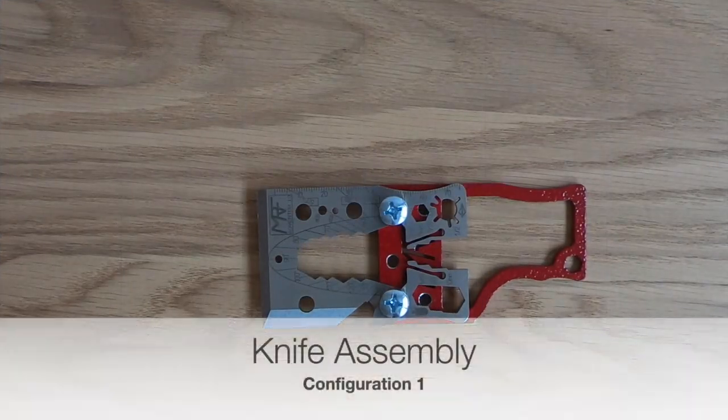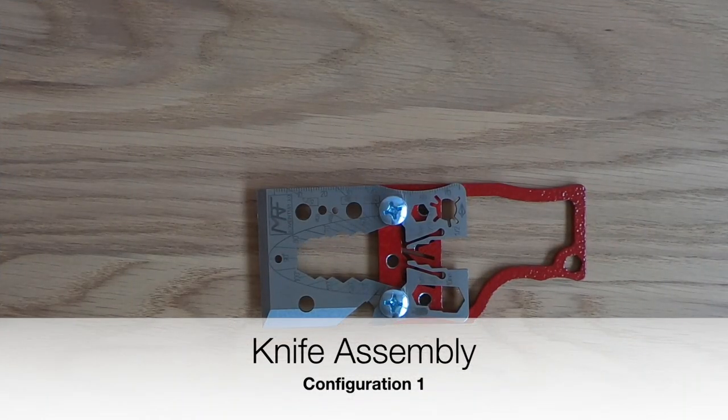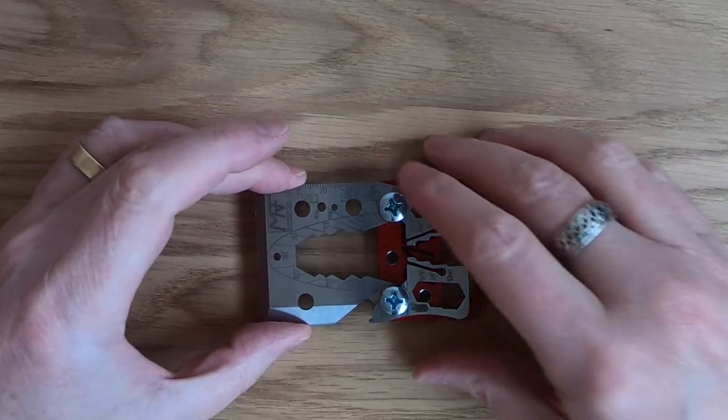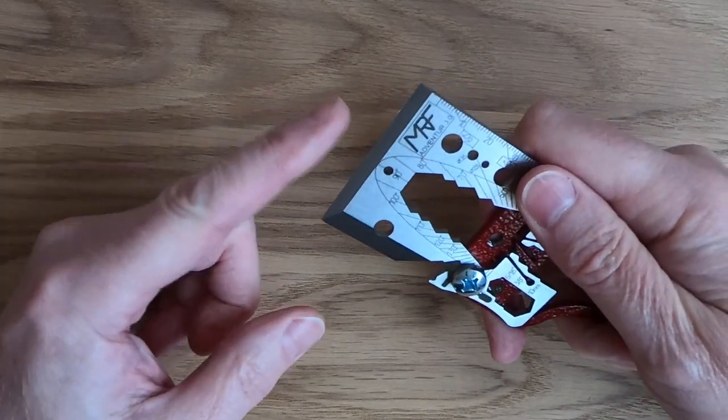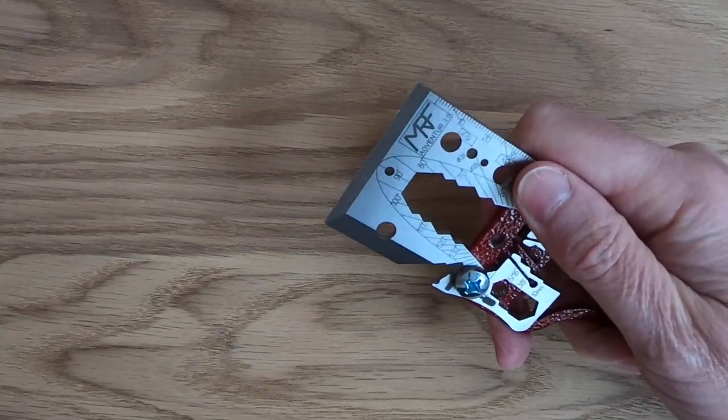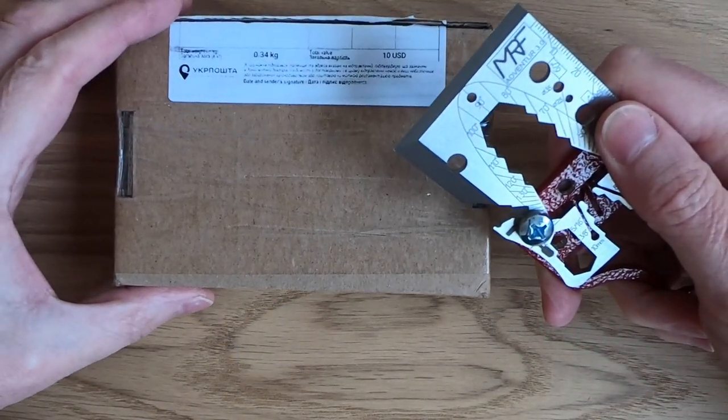The first configuration for the Adventure 3.0 is the knife assembly. So rather than having to hold it, which may be a little bit awkward or tricky, you've actually got a handle now where you can actually hold this and use these two edges as a cutting edge. And again we go back to the trusty cardboard box.